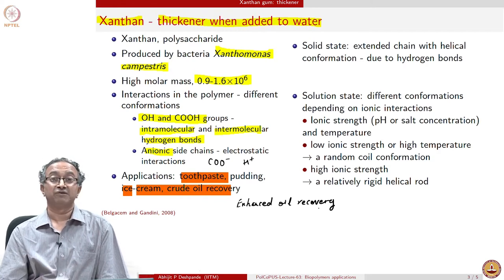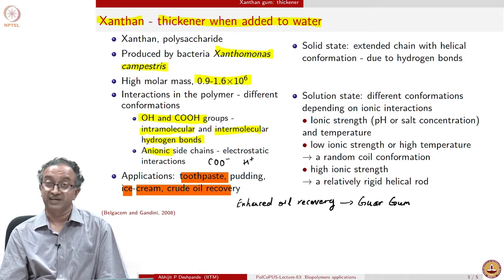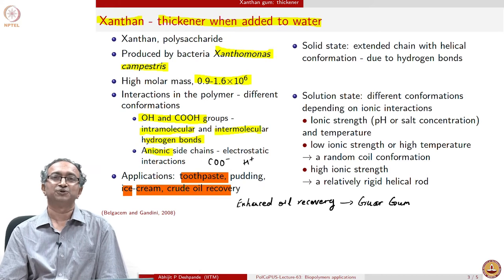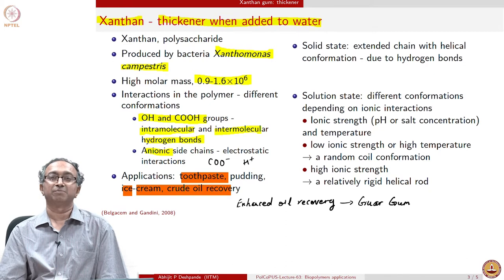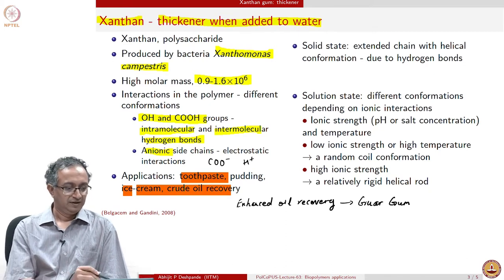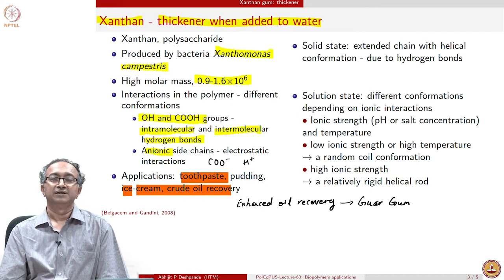Another important biopolymer gum is guar gum. Try searching about guar gum — where it originates from and who is the largest producer and supplier. You will be surprised that it is a vegetable which we are quite familiar with in different parts of India. Now, xanthan gum depending on which state it is in can have a different molecular structure.